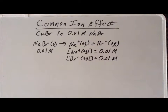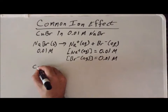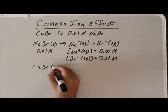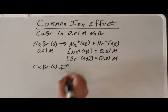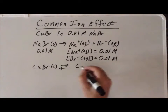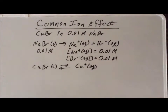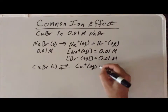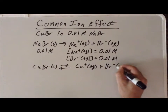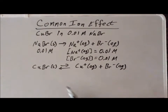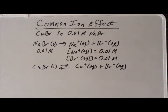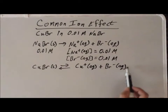So then we have our sparingly soluble salt, cuprous bromide, copper(I) bromide. Since this only dissociates and dissolves to a very small extent, we write the arrows in both directions. For every one that actually does dissolve, it breaks up into a copper(+1) ion and a bromide ion. This is different from previous circumstances because we have another source of bromide — the bromide already in the solution from the sodium bromide.